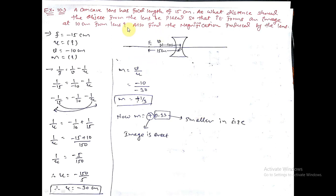Example 10.3: A concave lens has a focal length of 15 cm. Since it is a concave lens, focal length f = −15 cm. We need to find the object distance u such that the image forms at 10 cm from the lens. Since concave lenses always form images on the left-hand side, v = −10 cm. We need to find u.